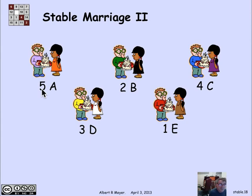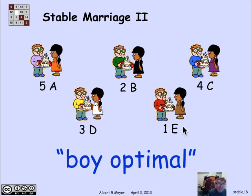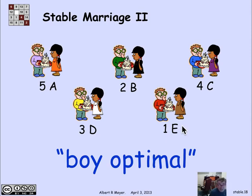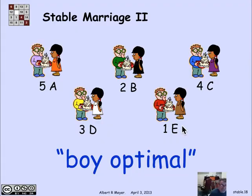There's another stable set that's not quite so obvious — you can check there are no rogue couples when marrying 5 to A and 1 to E. This is the boy-optimal set of marriages: every boy gets the best possible spouse he could get in any stable set. There's no stable marriage set where boy five gets a more desirable girl than A. The sad news is it's simultaneously pessimal for the girls — each girl gets their worst possible spouse among all stable sets.